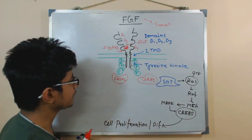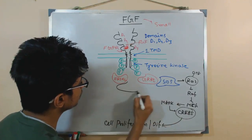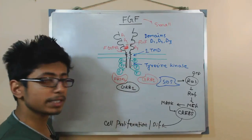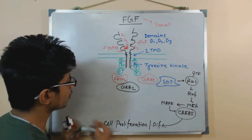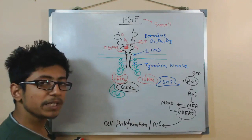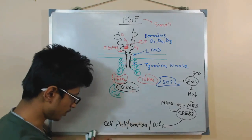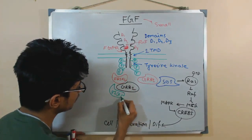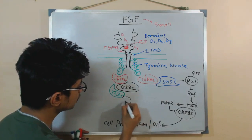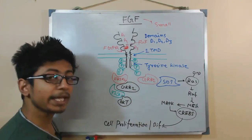Once FRS alpha 2 is activated, this protein will interact with other proteins like GRB2. GRB2 will interact with this protein, and once GRB2 is activated, it can activate PI3 kinase. PI3 kinase can activate another very major type of protein known as AKT or AKT kinase.